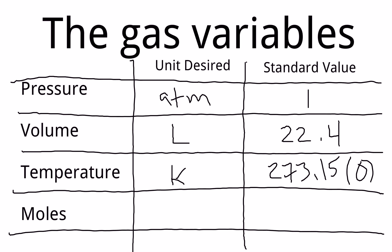The next variable is moles, which should be somewhat familiar. In relation to gas, the number of moles present in a system influences the gas's behavior because we're talking about how many molecules are actually present. More molecules means more volume must be occupied, and changing the volume also affects the pressure. Moles are abbreviated as N in gas law equations. One mole of gas is considered the standard value, though it can deviate.